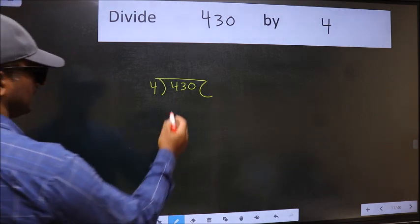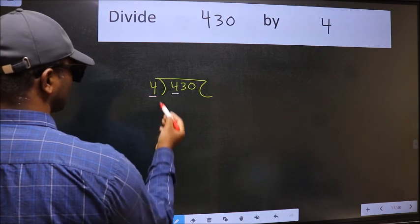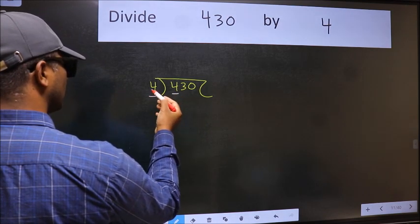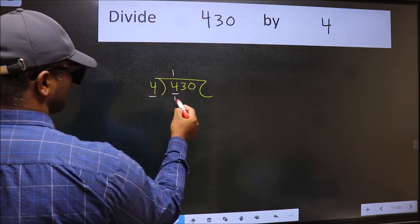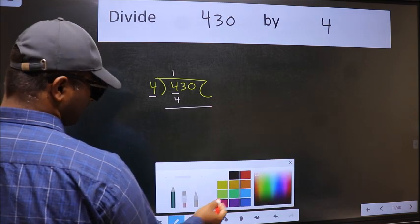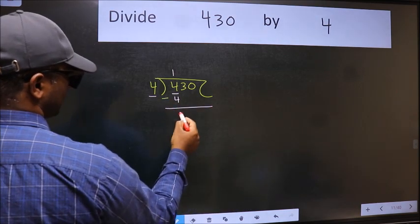Next. Here we have 4 and here also 4. When do we get 4 in 4 table? 4 once 4. Now we should subtract. We get 0.